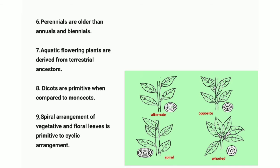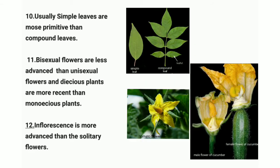Point nine: spiral arrangement of vegetative and floral leaves is primitive compared to cyclic arrangement. In spiral arrangement, leaves are arranged alternately one after another. In cyclic arrangement, leaves are in a cluster at one node.